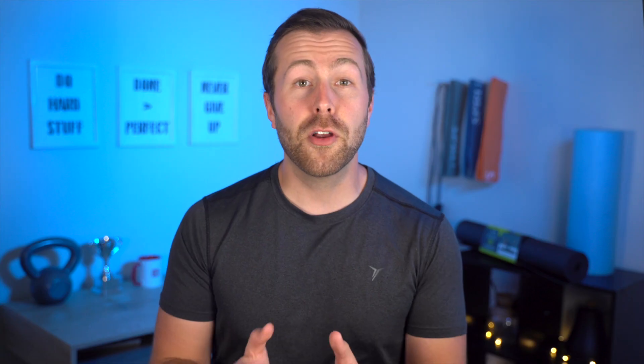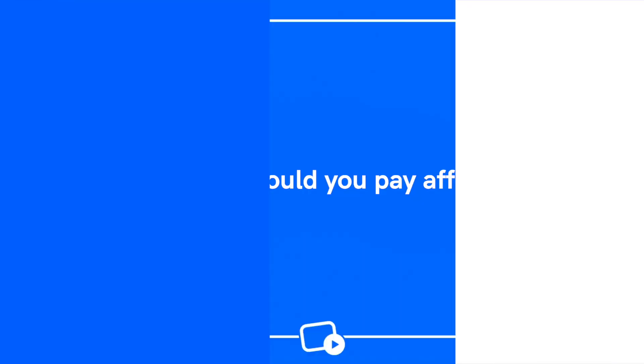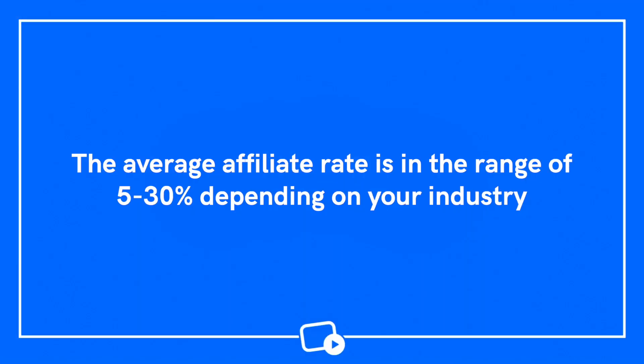Uscreen integrates directly with Refersion, making it easy to launch an affiliate program for your video-on-demand site in just a few clicks. Refersion works with Stripe, PayPal, and the Uscreen payment gateway, and is capable of generating reports to track important data and analytics. Refersion also allows you to automate commissions to help save time when it comes to payouts.